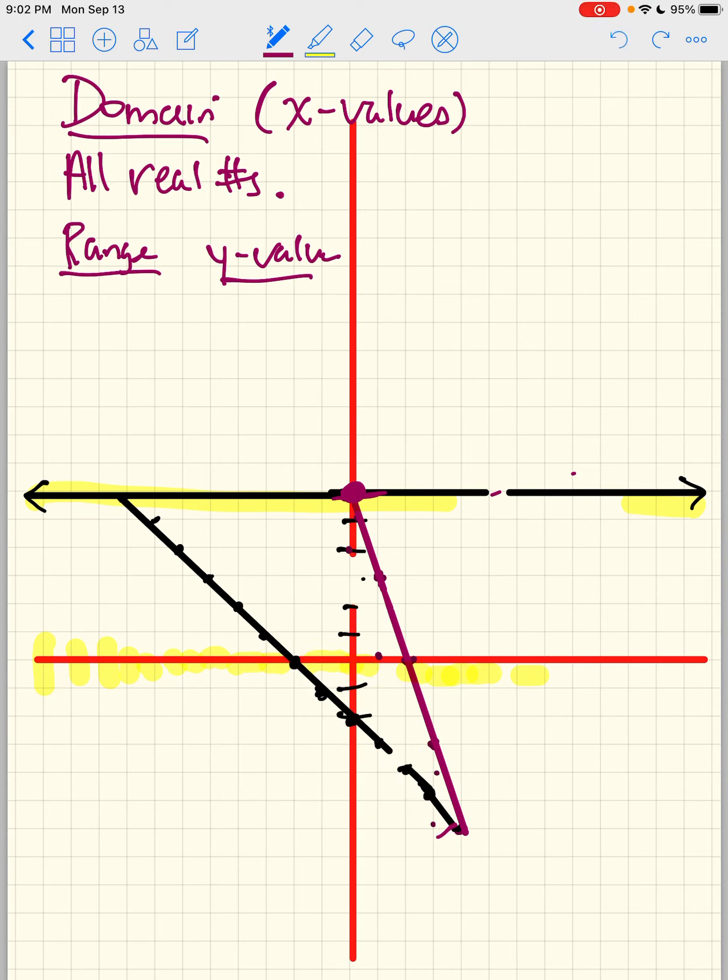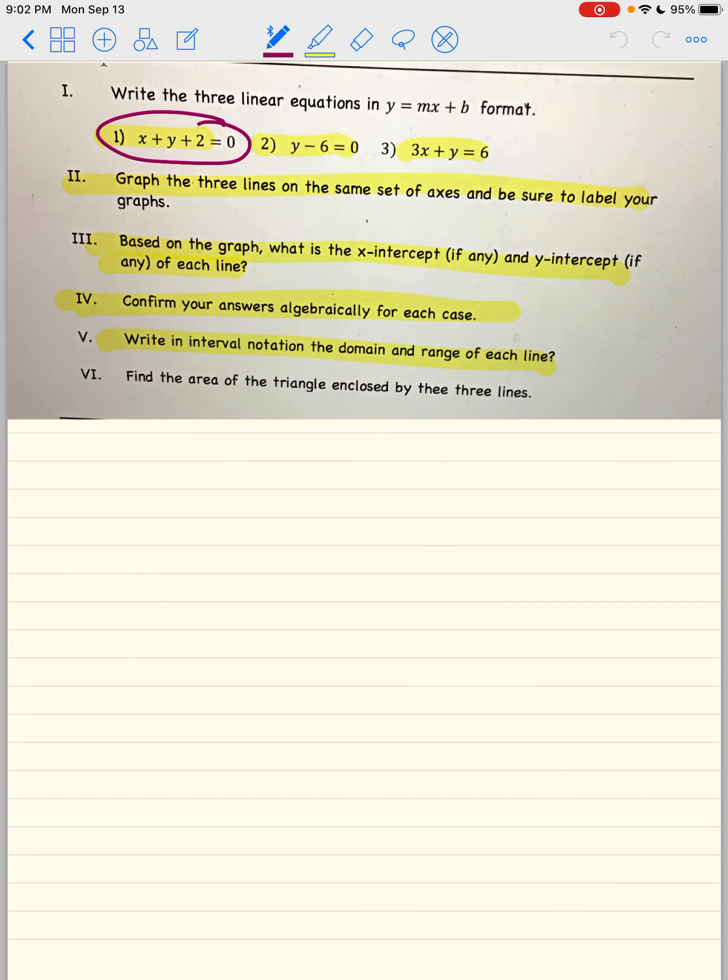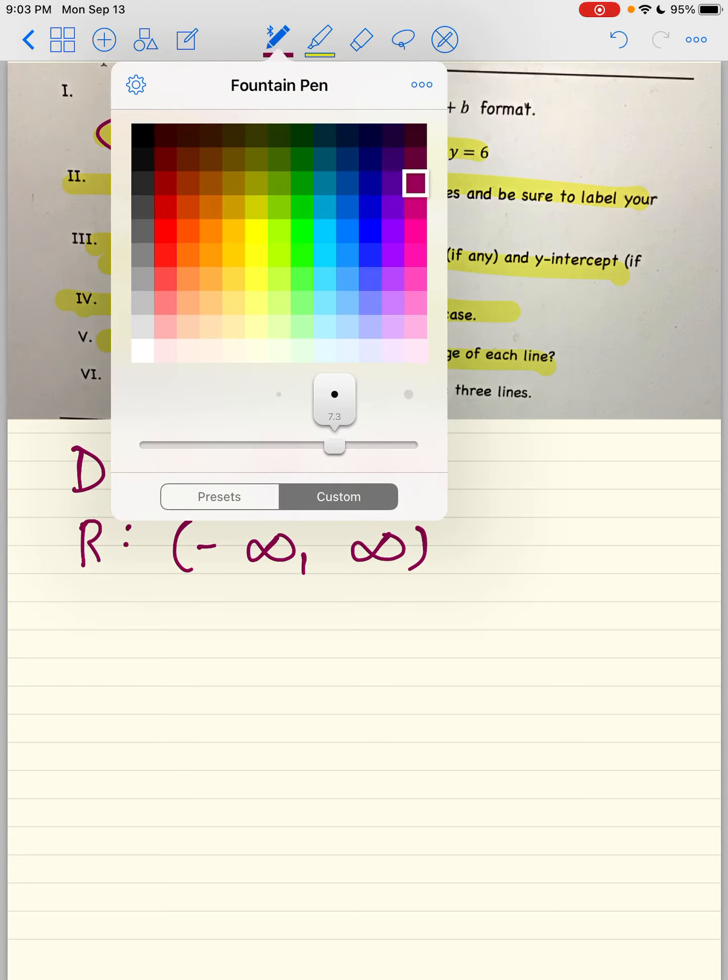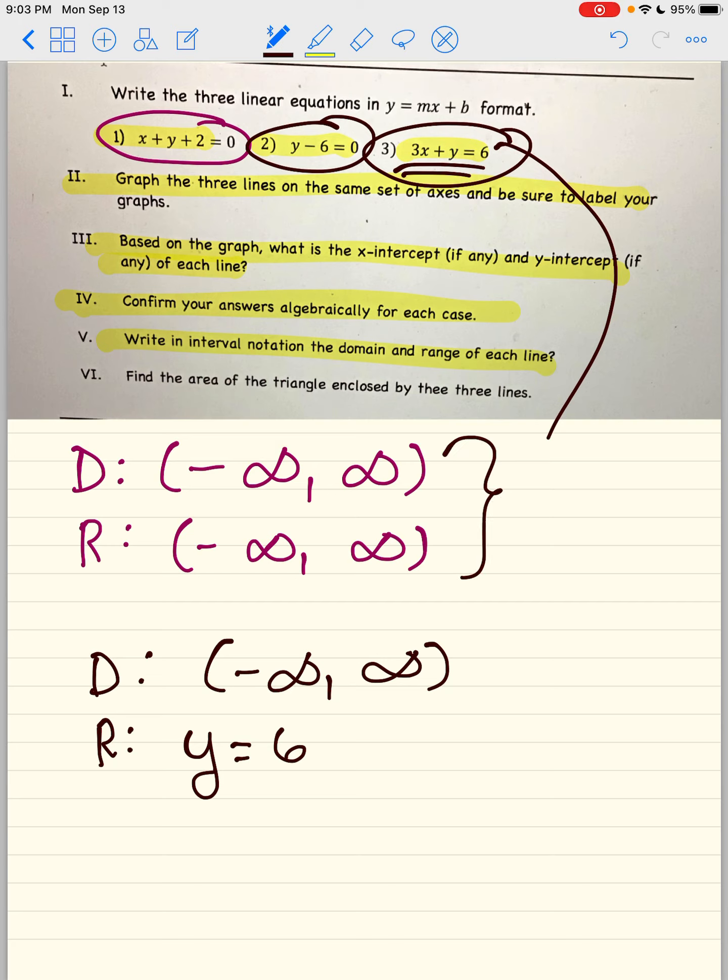So the only issue is that the question said write it in interval notation. So what I'm going to have to do in this case is this line, my domain is going to be from negative infinity to positive infinity, and my range will also be from negative infinity to positive infinity. For my second problem, which is this, my domain is negative infinity to positive infinity, and my range is just y equals 6. And for this, here will be exactly the same.